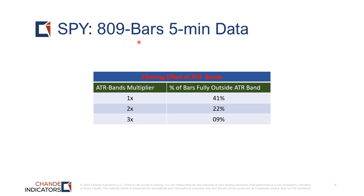For completeness, I analyzed about 800 five-minute bars on SPY data to understand the effect of filtering. At 1x, fully 41 percent of the bars were outside the bands — that is, the low was higher than the upper band or the high was below the lower band.